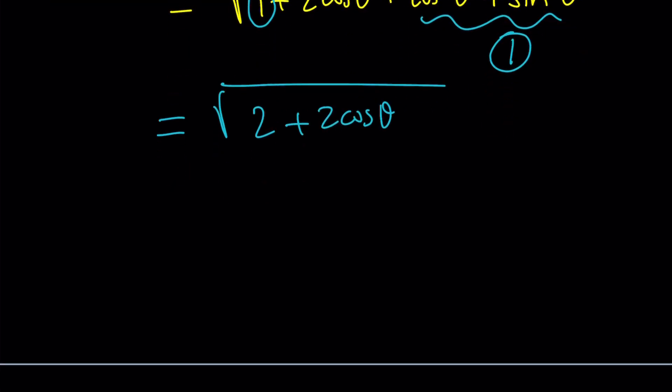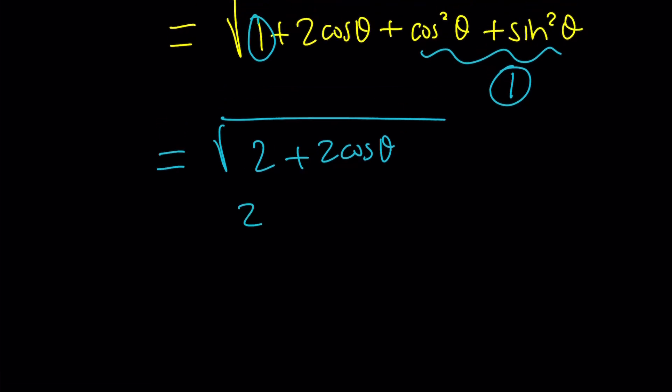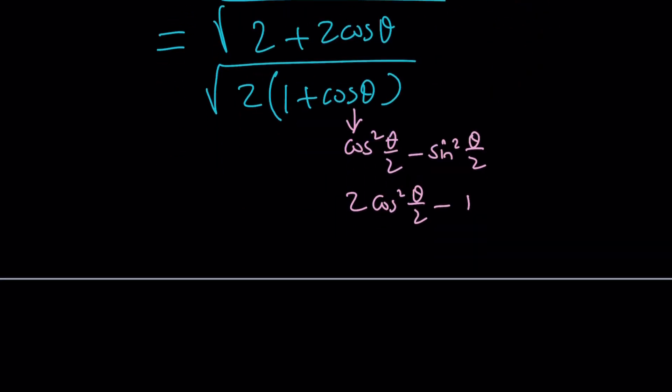So cosine theta can be replaced with something nice. In order to be able to see that, I will take out a two and write this as one plus cosine theta because that's going to simplify the process a little bit. Now cosine theta has three formulas. Let's write them all in terms of half of theta because theta in this case is double angle. So cosine squared theta over two minus sine squared theta over two is one of them. Another one is two cosine squared theta over two minus one. And that comes from the Pythagorean theorem. And the third one is one minus two sine squared theta over two.